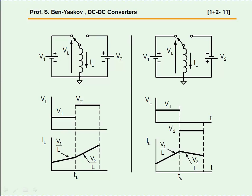Suppose we connect an inductor to two voltages, first to V1 and then to V2. The first part will have a linear rise, and the second part also a linear rise. Since V2 is larger than V1, the rate here is faster.